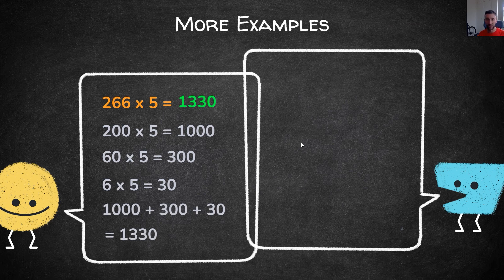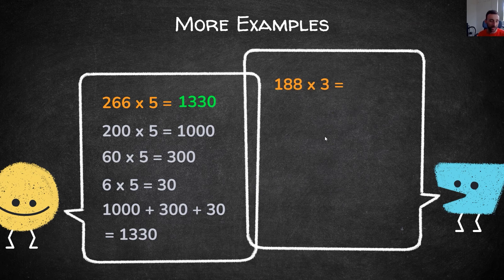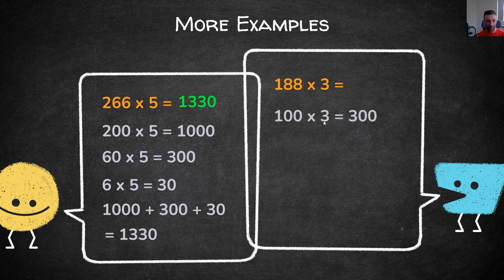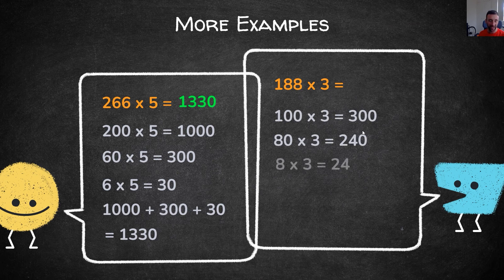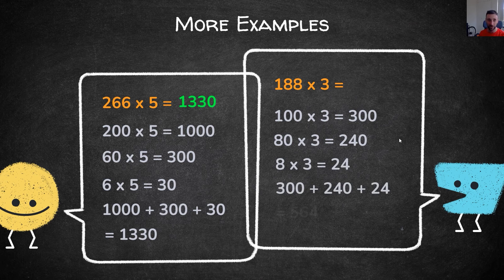Moving on to our second example, 188 times 3. Again, we partition into hundreds, tens and ones. 100 times 3 is 300, 80 times 3 is 240, and 8 times 3 is 24. Just add them up: 300 plus 240 plus 24 gives us 564.